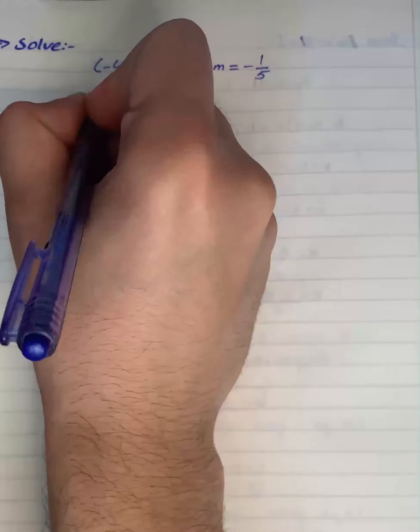-1/5 equals (-7 - K) over 10. Now we have to eliminate the 10, so we will multiply both sides by -10.